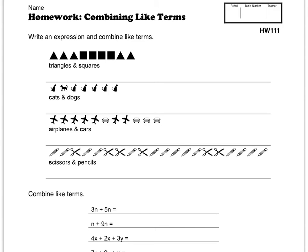Hello and welcome to tonight's homework help for Monday night, October 29th, 2012. We're going to jump right in with combining like terms. Write an expression and combine like terms. As you can see here, there are different shapes like triangles and squares. Highlighted are T and S to use as variables.